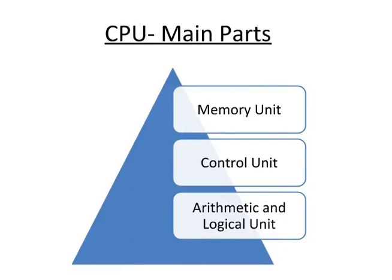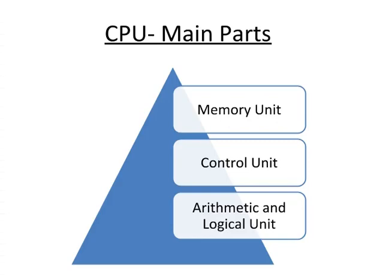MU is the short form of Memory Unit — it stores data. CU is the short form of Control Unit — it controls the flow of data. ALU is the short form of Arithmetic and Logical Unit — it does calculations.